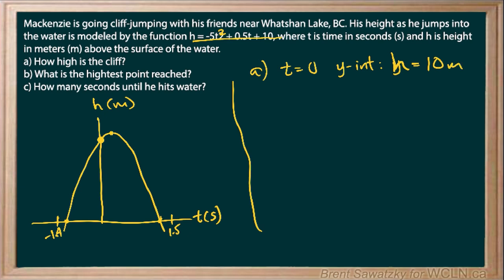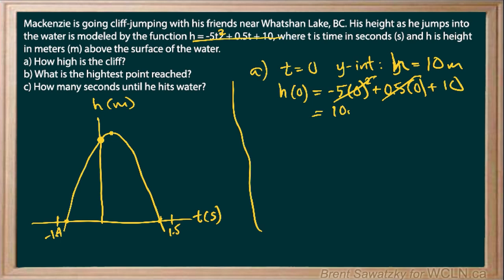An algebraic way to double-check: what is the height when time is zero? We plug t equals zero into the equation. Anything times zero is zero, so both of those terms disappear, and all we're left with is the 10 at the end — 10 meters. So two ways to justify that yes, 10 meters is the height of the cliff, and when time equals zero that's where our cliff jumper begins.